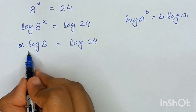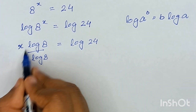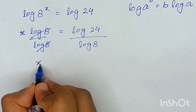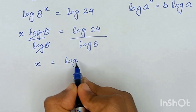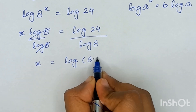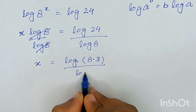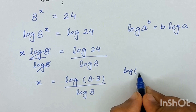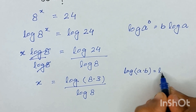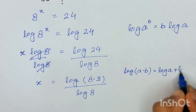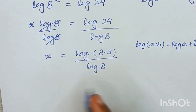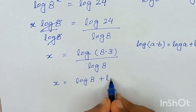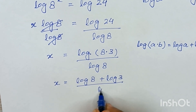Now, dividing log of 8 on both sides to find the value of x. This log of 8 and log of 8 will cancel out, and x is equal to log of 24, which can be written as log of 8 times 3, divided by log of 8. As we know that log of a times b is equal to log of a plus log of b, so it will become x is equal to 1 plus log of 3 divided by log of 8.